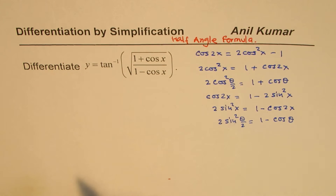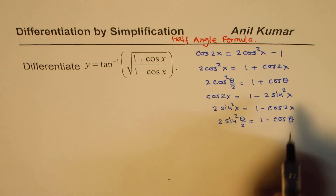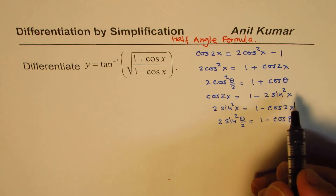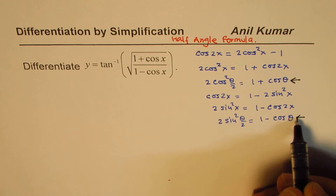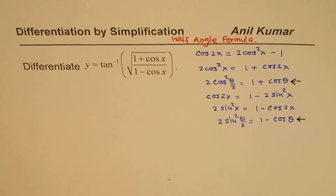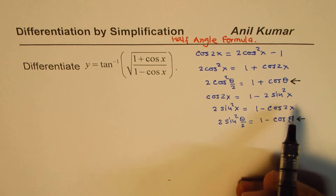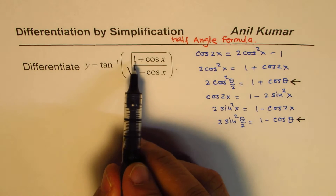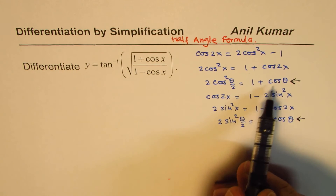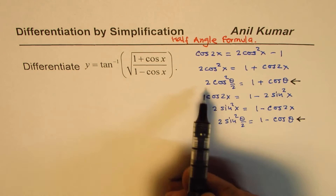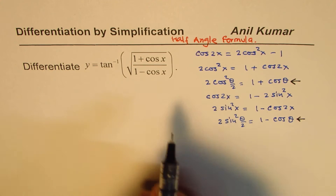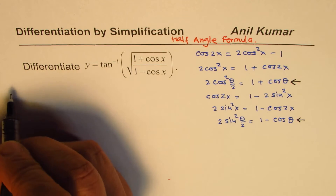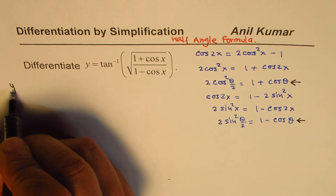As you can see, we have a relation that can help us. So 1 plus cos x can actually be written as 2cos²(x/2). We are given y equals to tan inverse, and instead of 1 plus cos x we're going to use 2cos²(x/2).